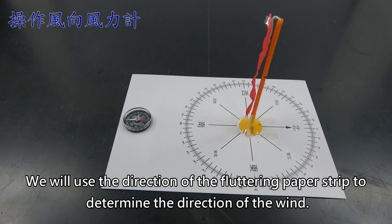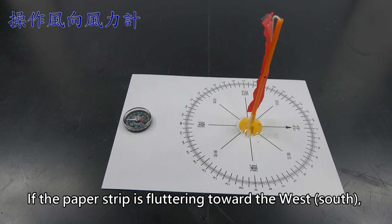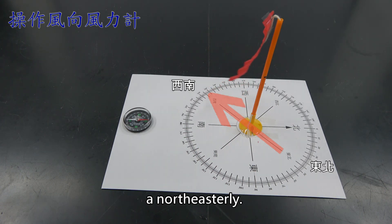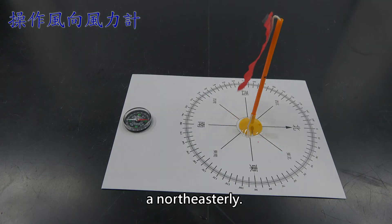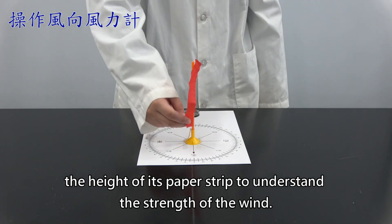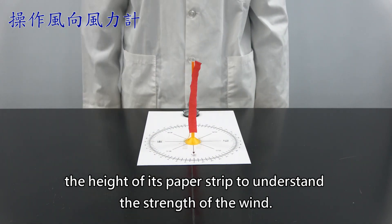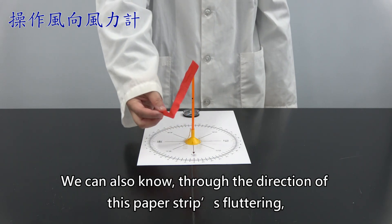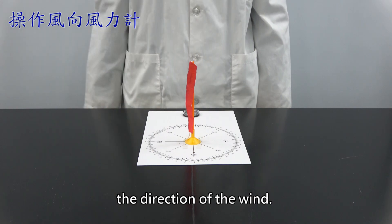We will use the direction of the fluttering paper strip to determine the direction of the wind. If the paper strip is fluttering toward the west-south, we will call this wind as coming from the northeast, a north-easterly. Through this anemoscope and the height of its paper strip to understand the strength of the wind. We can also know through the direction of these paper strips fluttering the direction of the wind.